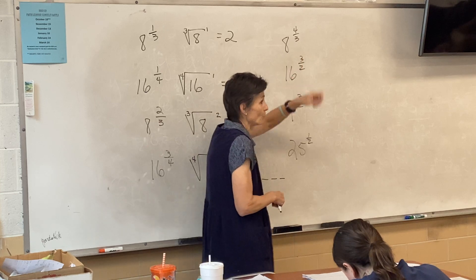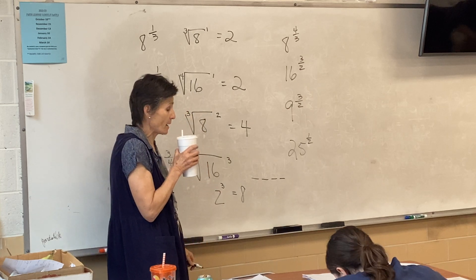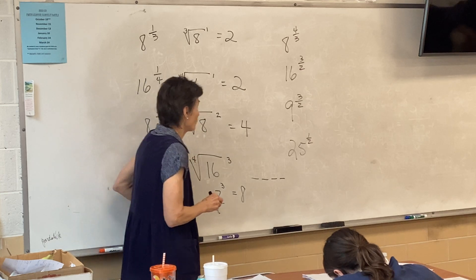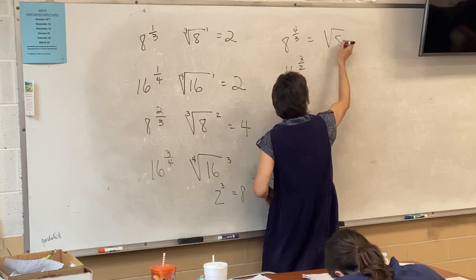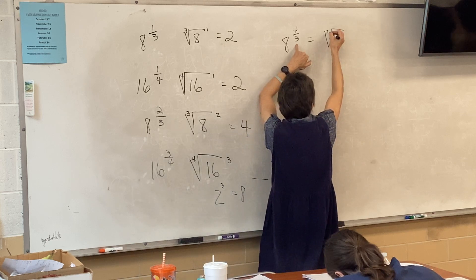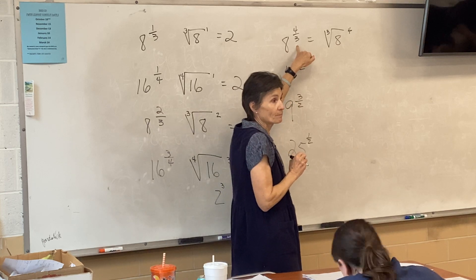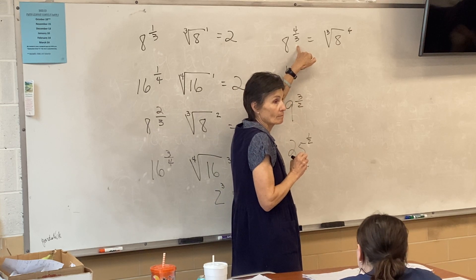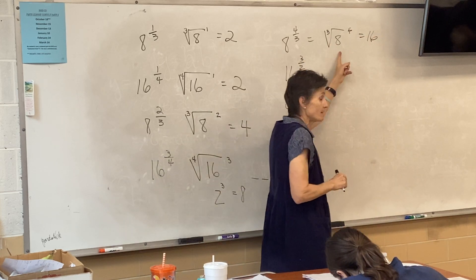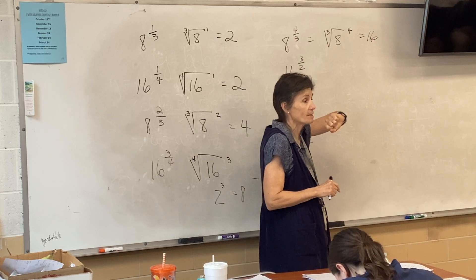Try this one on your own: eight to the four-thirds. It's a fraction so it's a radical. The number goes under the radical. The fraction tells you which root and which power. The answer is 16, because the cube root of eight is two, and two to the fourth is two times two times two times two, which is 16.